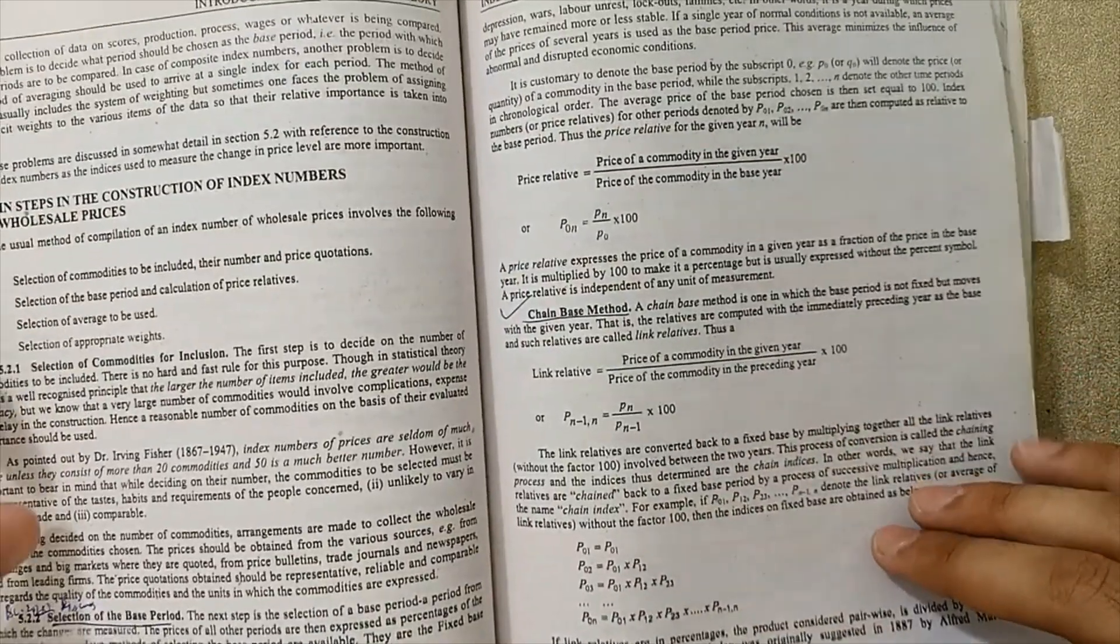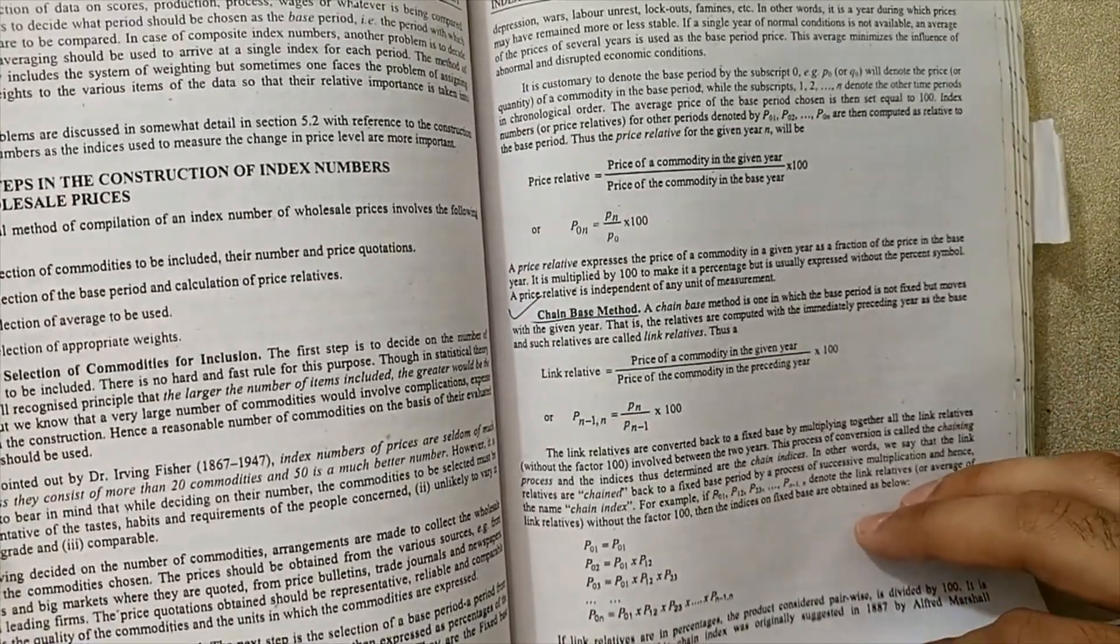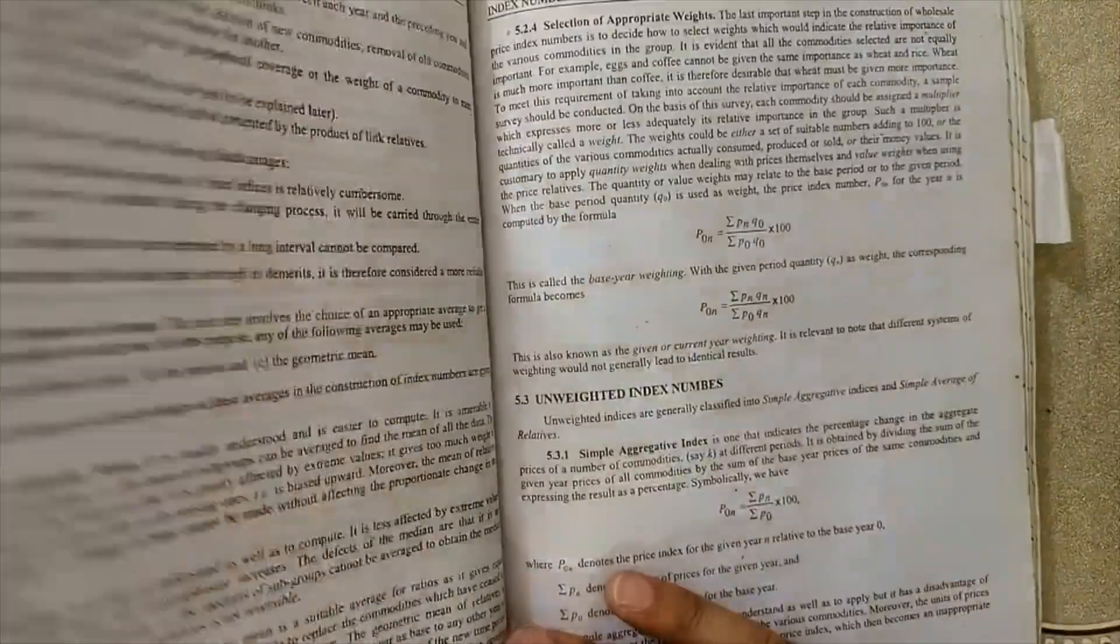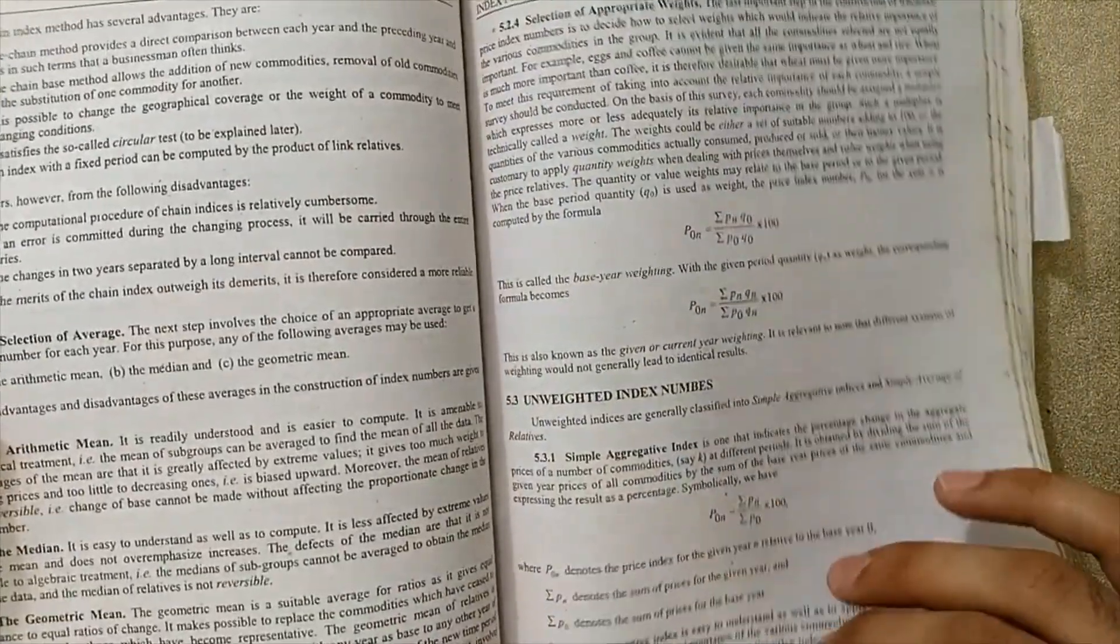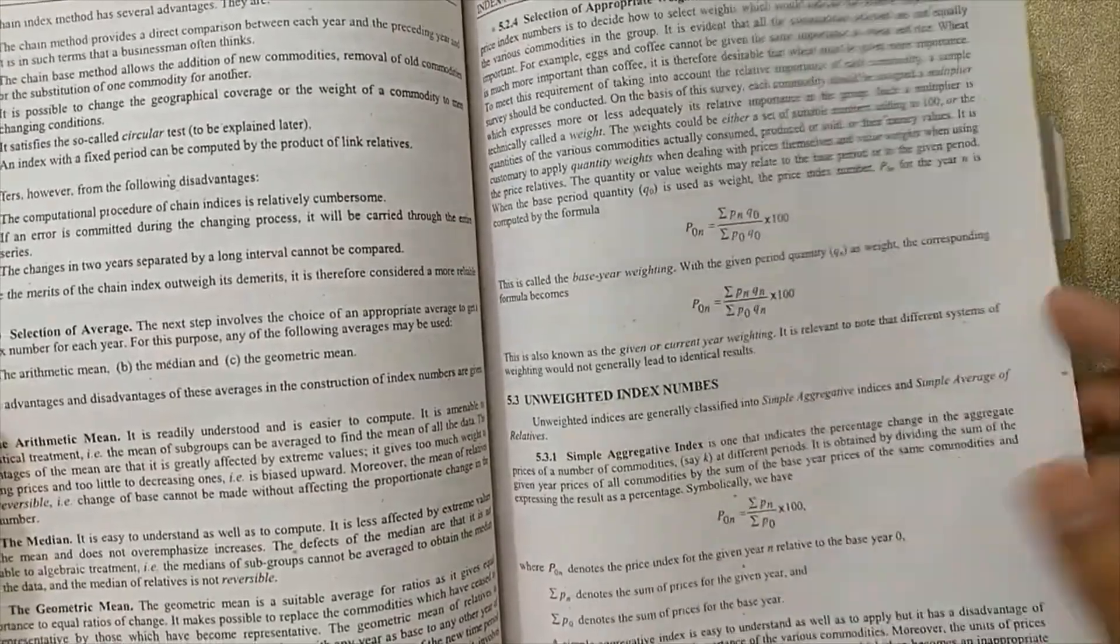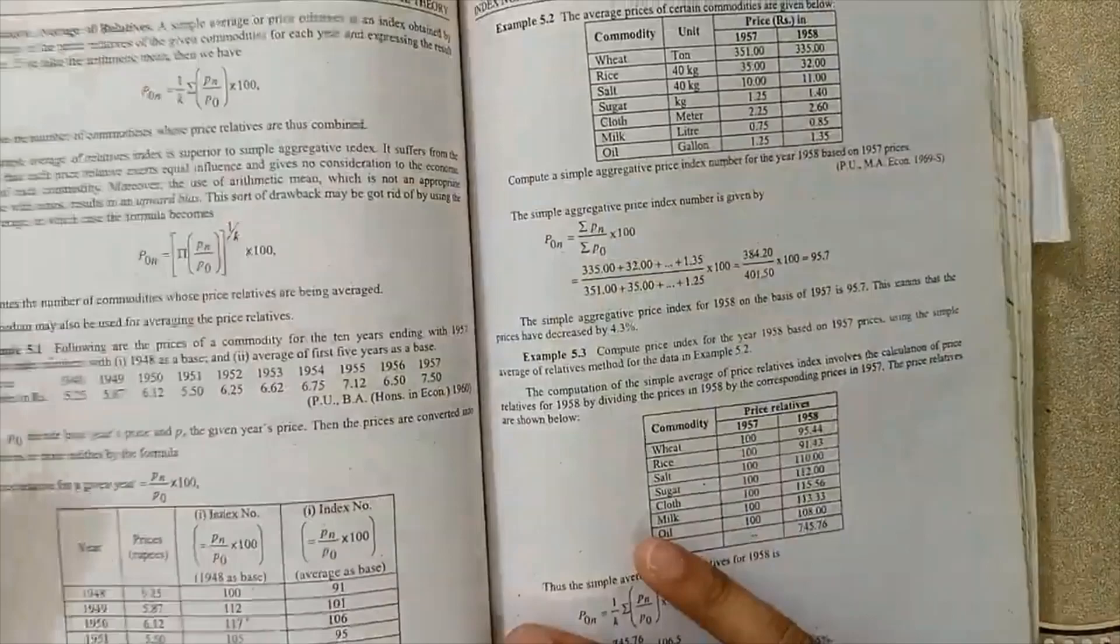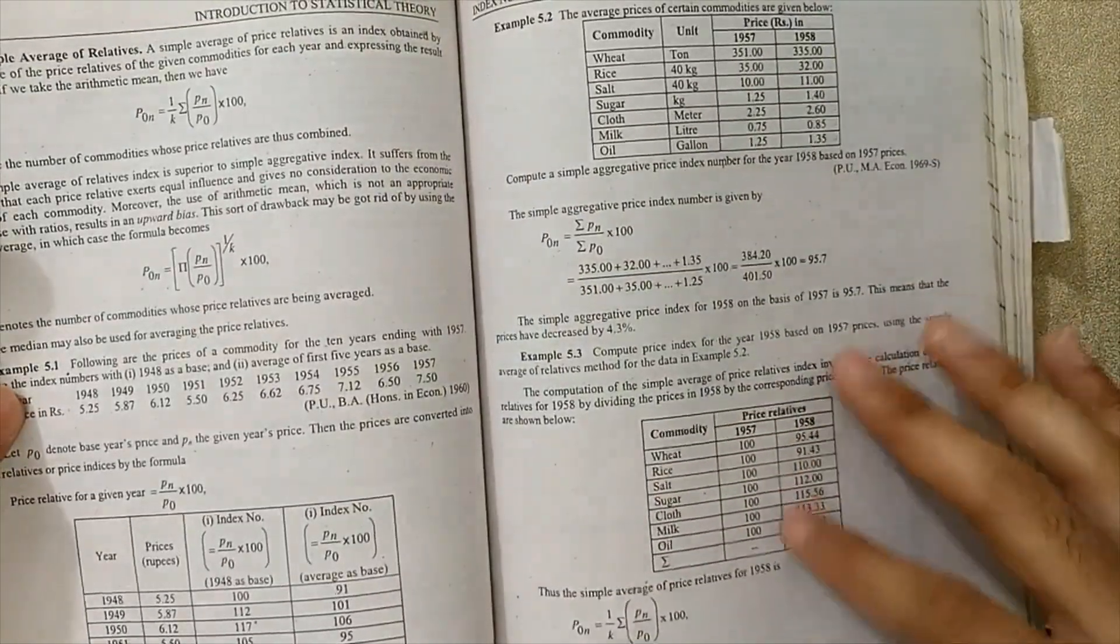Next step is here: chain base method, selection of base method is very, very important, fixed base method, what is chain base method. Must remember the difference between them. Next, unweighted index number, simple aggregate index number, simple average relatives is very, very important topics.